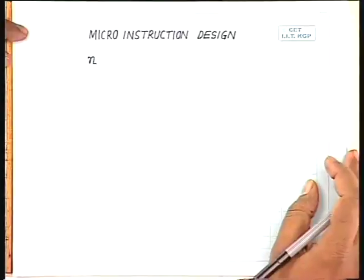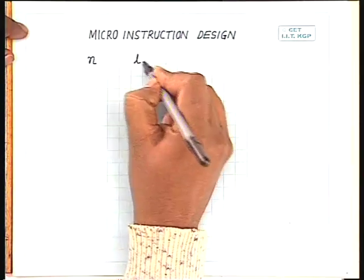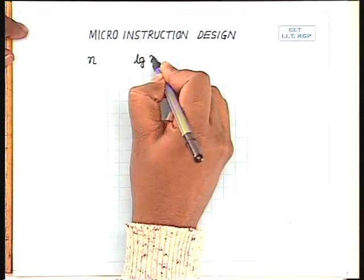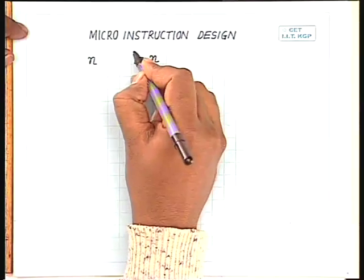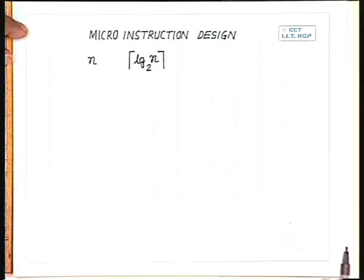One of the simplest ways is instead of directly putting the control signals in the control memory, you encode the control signals and put the encoded control signal in the control memory. So that way, if I have n number of control signals present in a system, the number of bits in every location in the memory that we will need is the ceiling of log base 2 of n. That will be the number of bits needed in every location in the control memory.